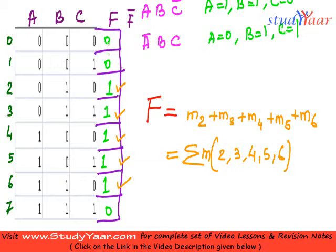So wherever my F is 0, F bar is going to be 1 because complement of 0 is 1. And wherever my F is 1, F bar is going to be 0. So this is my F bar.